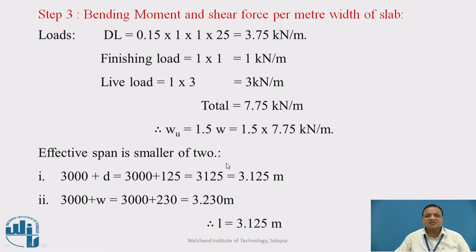Effective span is the smaller of the two. As per clause 22.2 of IS456, it is L_c plus D, that is 3000 plus 125 equals 3.125 meter, or 3000 plus 230 equals 3.23 meter. Out of these two, the lesser is 3.125 meter.